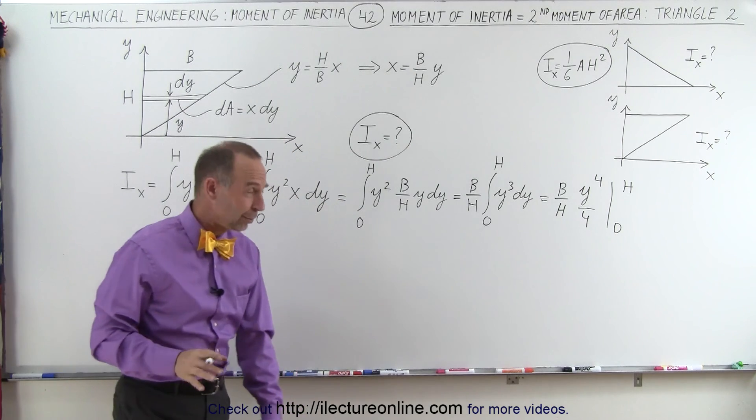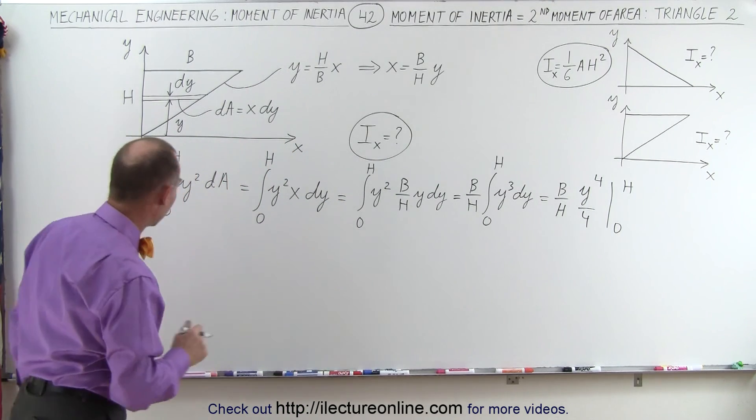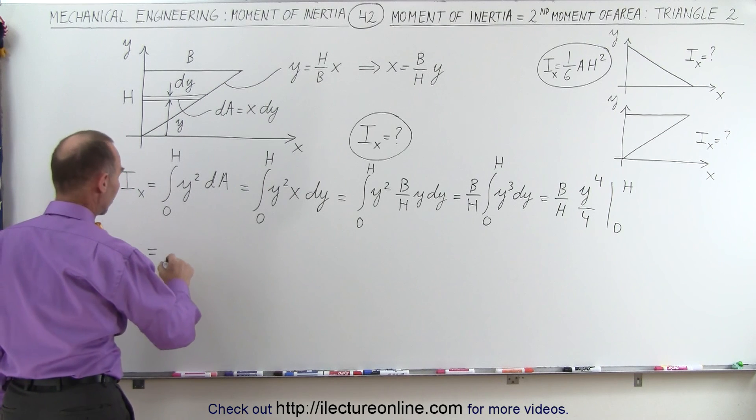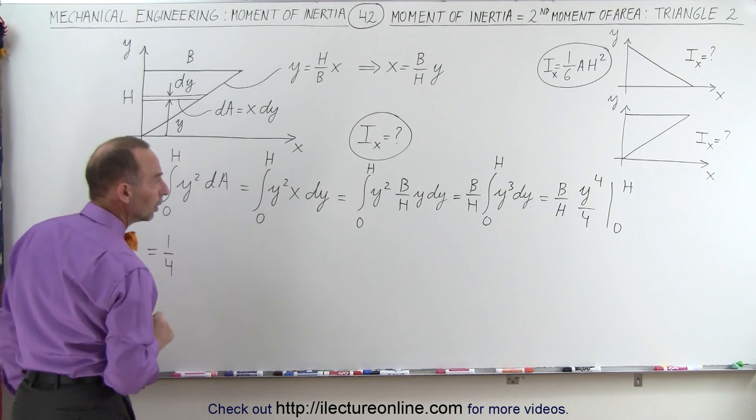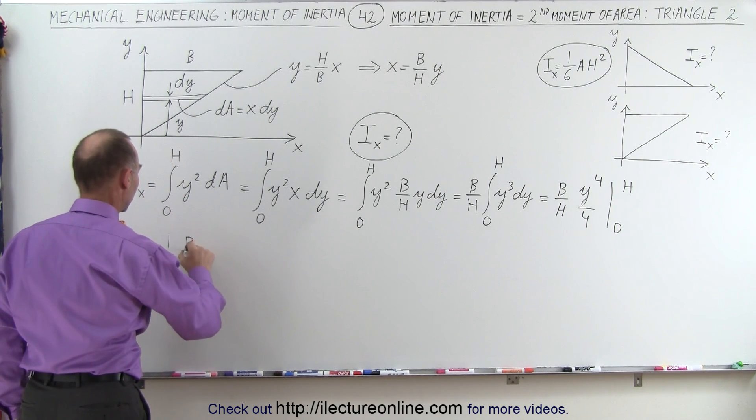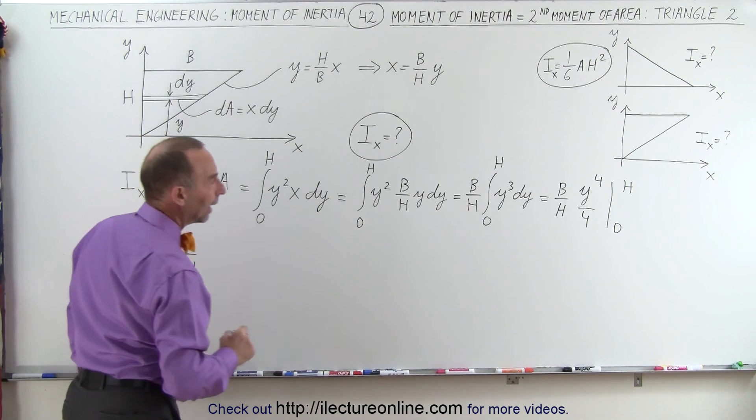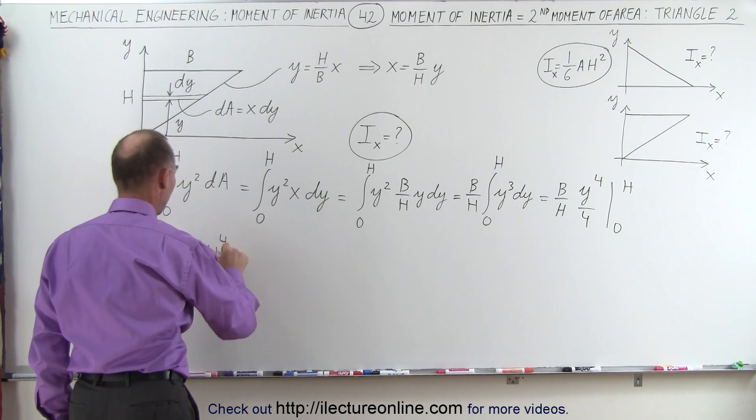When we plug in the lower limit, we get 0. When we plug in the upper limit, we get the following. This is equal to 1 quarter b over h, and that gives us h to the fourth power.